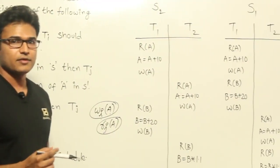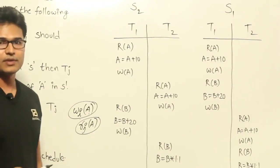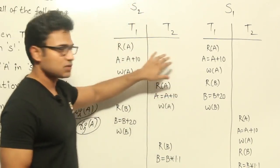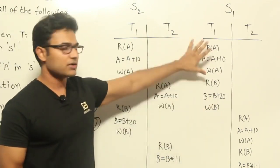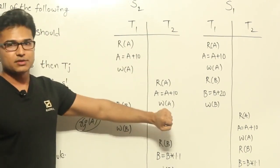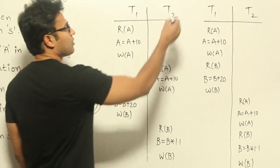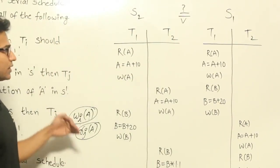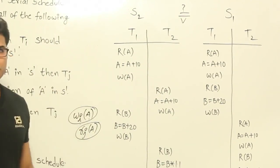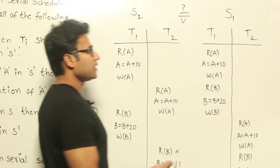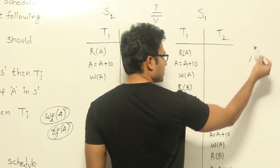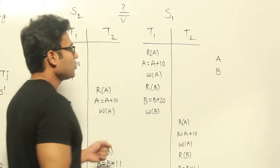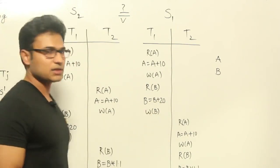Let's see this example. Here we have two transactions, and using these two transactions we have made two schedules. Let us say this is S1 and this is S2. S1 is a completely serial schedule, and S2 is not a serial schedule. Now I want to find out whether these two are view equivalent. Just see what are all the data items you have and compare both of them. The data items are A and B.